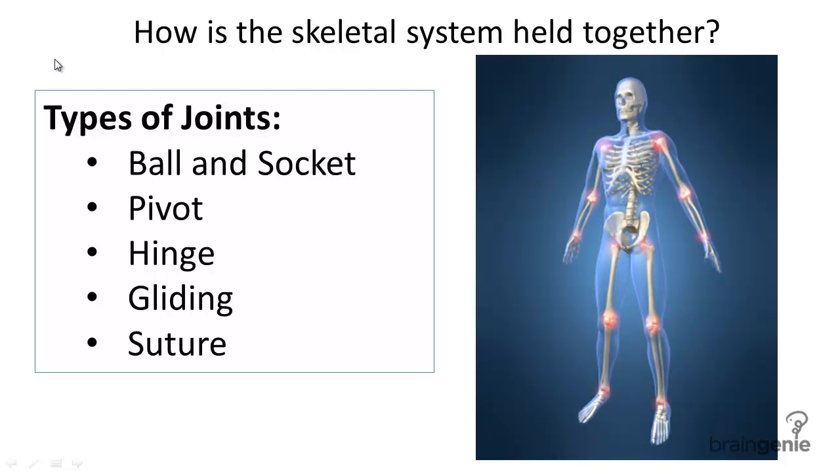So what is a joint? A joint is one way in which the skeletal system is held together. A joint is defined as where two or more bones meet. There are five types of joints that we'll discuss today.